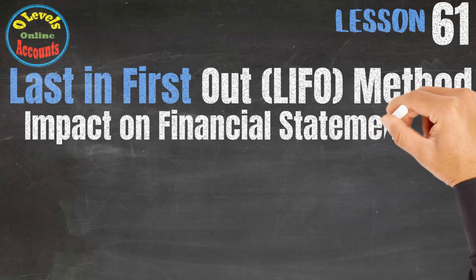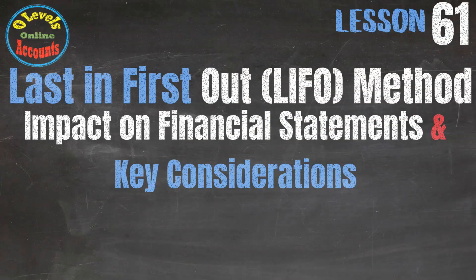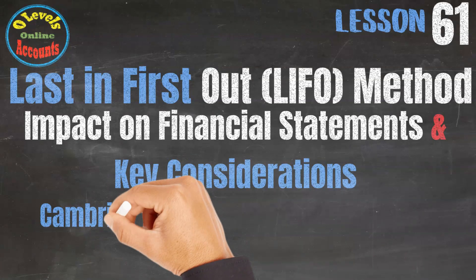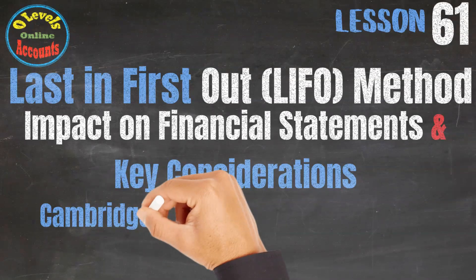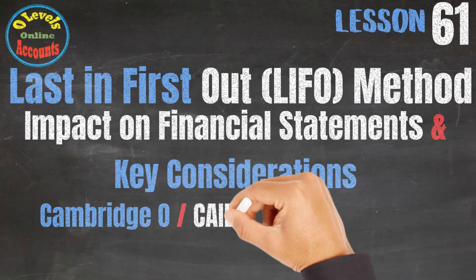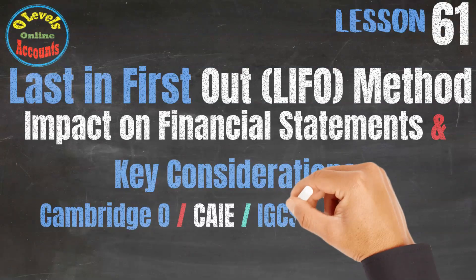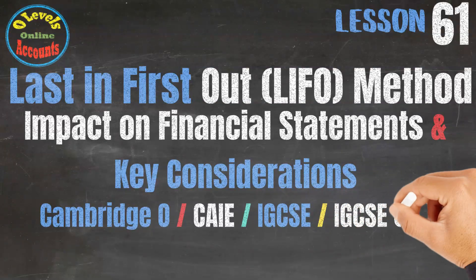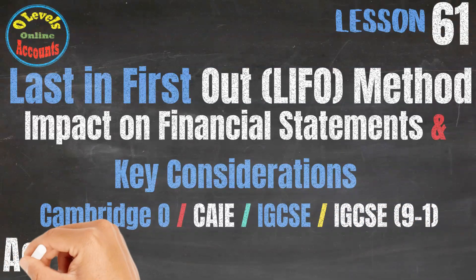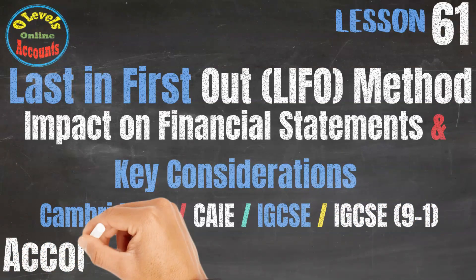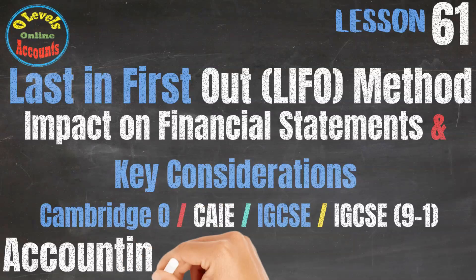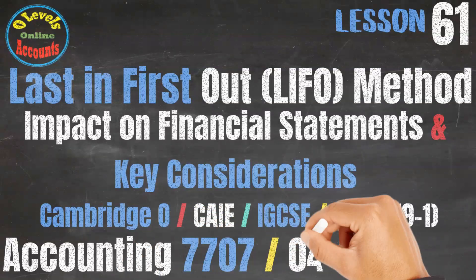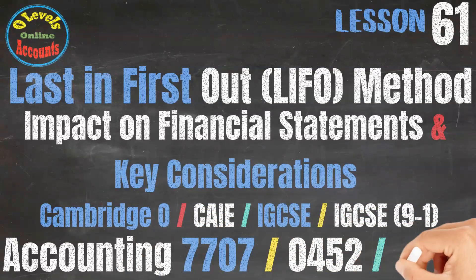This video series is helpful for those students who are appearing in Cambridge O-Level upcoming exams, either in June or November, through CAIE or IGCSE or IGCSE 9-1, for accounting 7707, or 0452, or 0985.